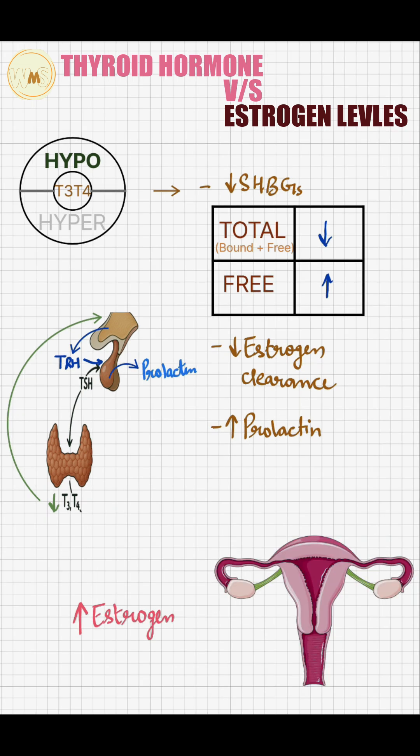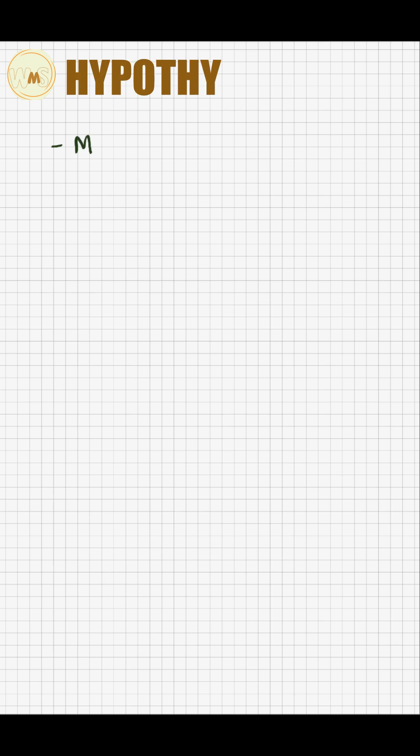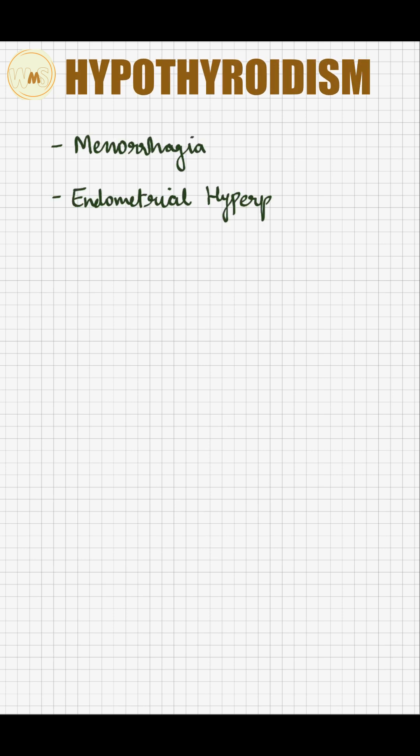In hypothyroidism, prolonged exposure of endometrium to unopposed estrogen contributes to menorrhagia and endometrial hyperplasia risk, which increases the risk of endometrial carcinoma, breast tenderness, and breast carcinoma.